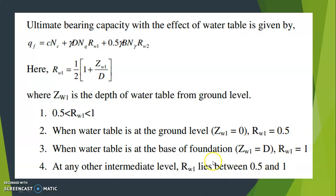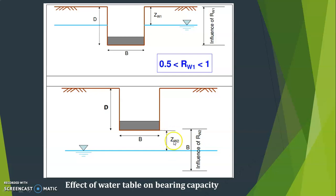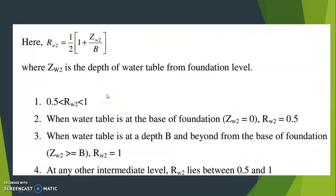To summarize: when the water table is at the ground level, R_w1 = 0.5; when the water table is at the base of the foundation, R_w1 = 1; for any intermediate level, R_w1 lies between 0.5 and 1. Similarly, R_w2 = (1/2)(1 + z_w2/B), where z_w2 is the depth of the water table from the foundation level and B is the width of the footing.